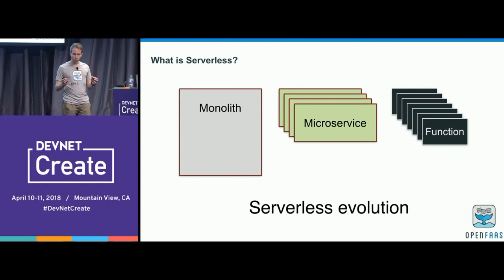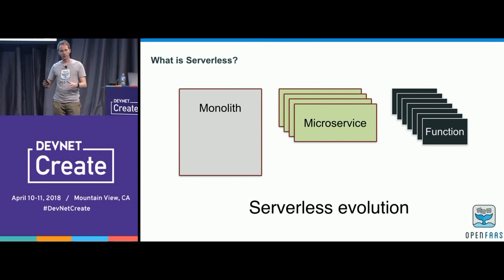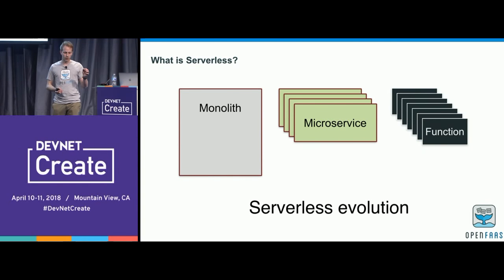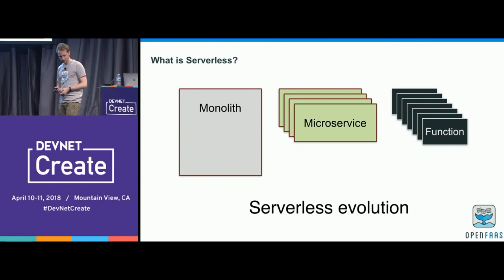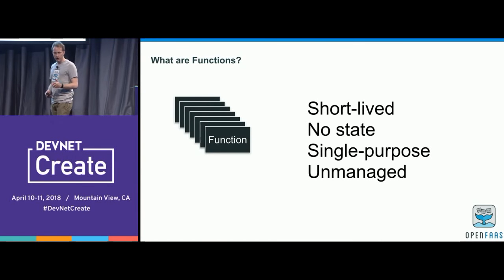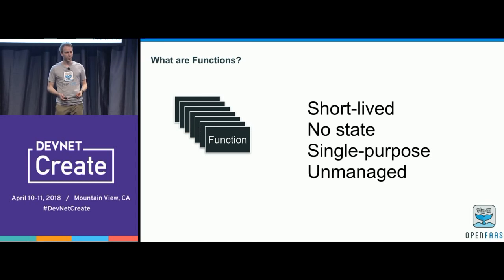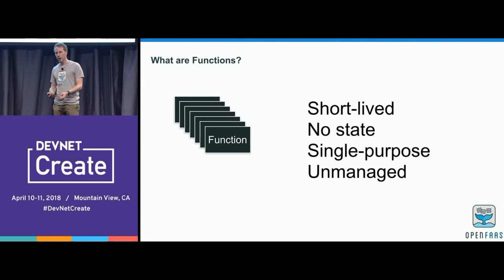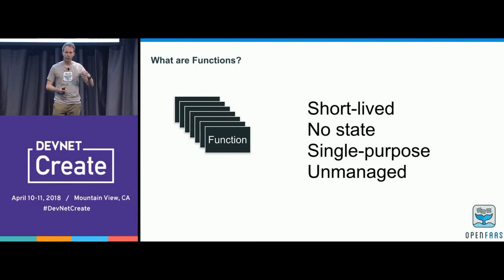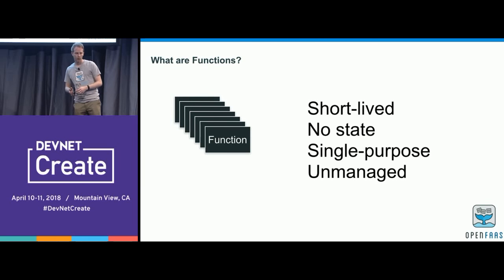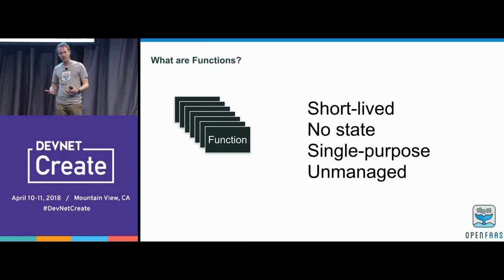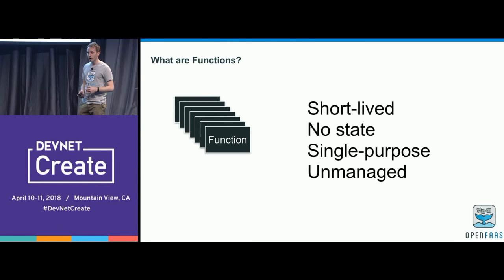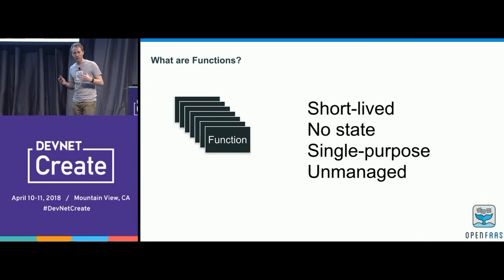Functions are small, reusable chunks of code. You can compose them together to make new workflows, and you can also use them to talk to your microservices and monoliths. They're short-lived, tending to run for maybe a second or a few seconds. They have no state — no database inside them. You can't guarantee a call will come back to the same function again. They're single-purposed, taking an input and producing an output. And we generally don't have to manage them — a serverless system will look after them for you.